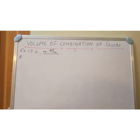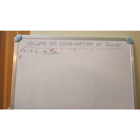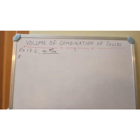Now question number 5. A vessel is in the form of an inverted cone. Its height is 8 cm and the radius of its top, which is open, is 5 cm. It is filled with water up to the brim. When lead shots, each of which is a sphere of radius 0.5 cm, are dropped into the vessel, one-fourth of the water flows out. Find the number of lead shots dropped in the vessel.